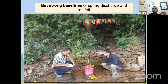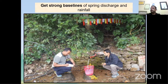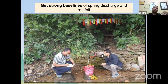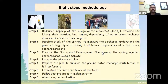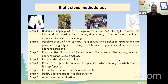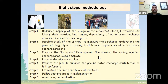We devised an eight-step methodology — an SOP for spring shed development: resource mapping, baseline study of the spring, preparing a spring shed development plan or lake revival plan, estimation, implementation, and documentation of best practices. There are two types of engineering structures used for spring recharge in the Himalayas. One is a pond — 10 feet by 10 feet by 2.5 feet. The other is a trench — 6 feet by 3 feet by 2.5 feet. All are made in a staggered way — staggered trenching or staggered ponding.